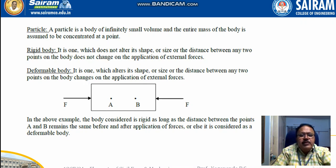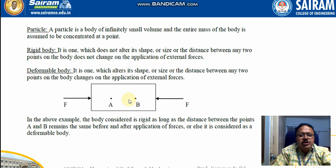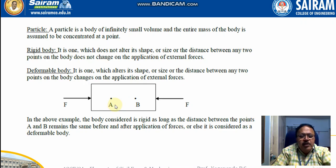A rigid body is one which does not alter its shape, size, or the distance between any two points on the body. If you consider two points A and B, after the application of force, if there is no change in shape or size, or the distance between the two points remains unchanged under external force, then it is called a rigid body. A deformable body, on the other hand, alters its shape or size — the distance between two points before and after application of load is not the same.